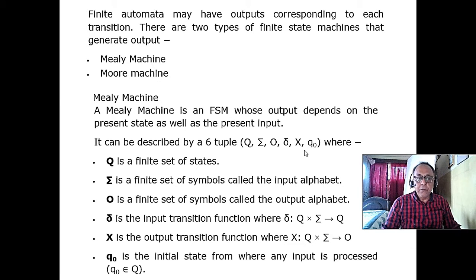We don't, we are not interested whether it goes to accept state or reject state. Rather, we are interested in transition. We have two delta functions. One delta function for transition, and sigma is the input alphabet and O is the finite set of symbols output alphabet.